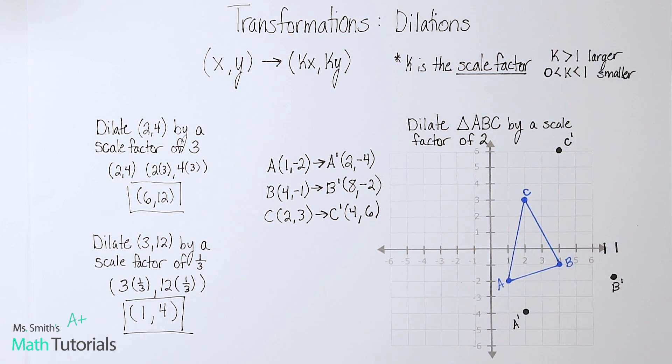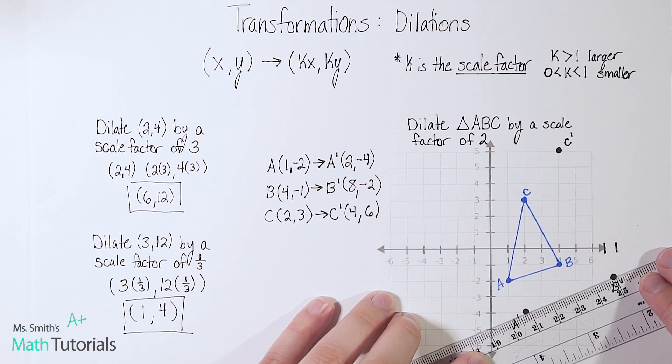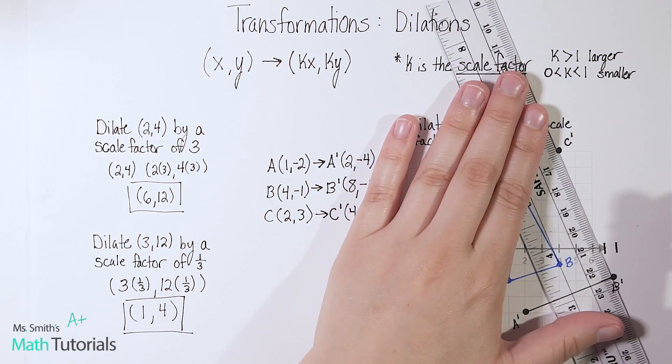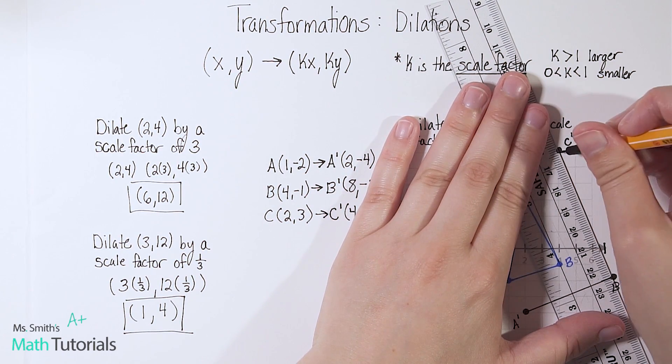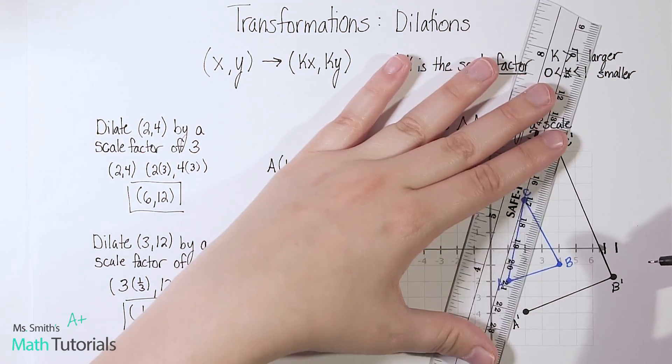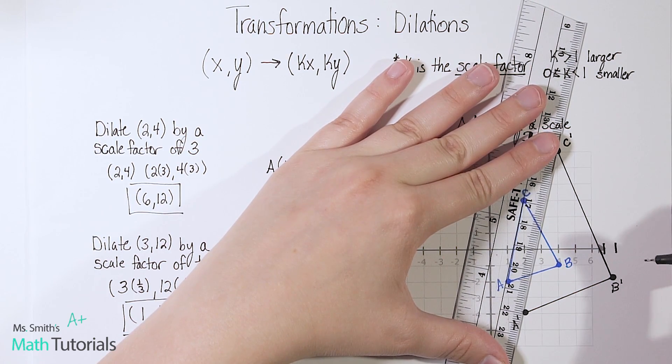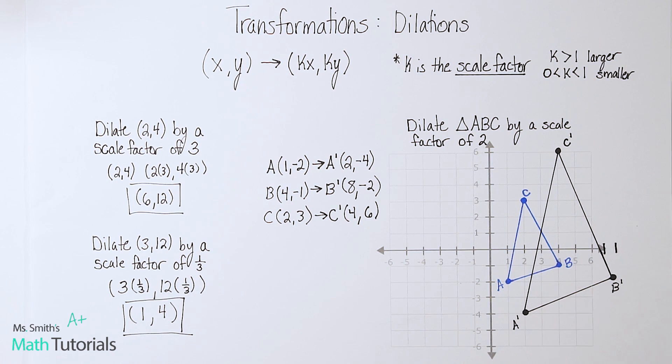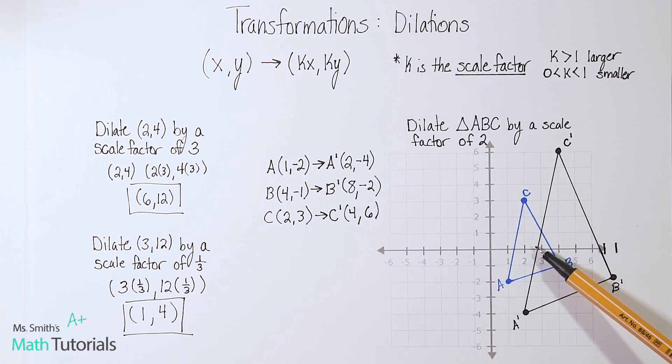So I'm going to go ahead and connect my picture, my new triangle. Now notice how my picture did get larger. So the blue we would call the pre-image, the black triangle we would call the image, and it did, in fact, get larger. It has doubled in size because we dilated by a scale factor of 2.